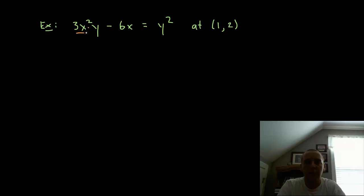But the first term would be the product rule. We'd have derivative of the first, 6x, times the second, plus the first, 3x squared, times the derivative of the second.